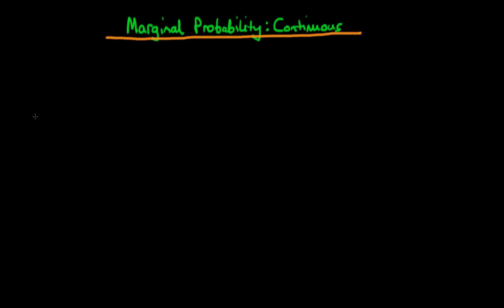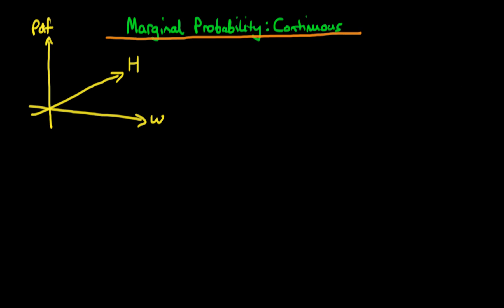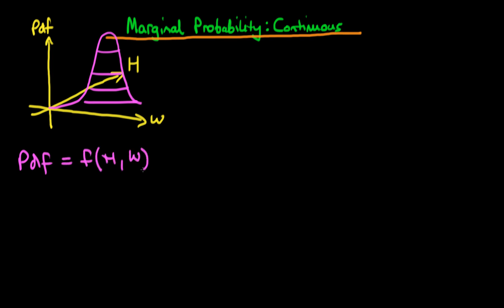The example I'm going to talk about is one whereby we have a PDF which is a function of the height of an individual and the weight of an individual, which I'm going to call w. We could represent this PDF as a sort of volume whereby the height of the volume represents the PDF value. We might imagine there's some sort of cone shape here across both height and weight. So our PDF here is f of both the height and the weight of an individual.